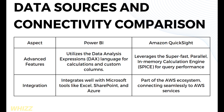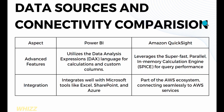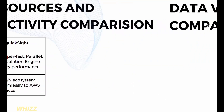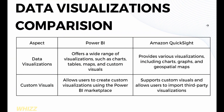In terms of integration, Power BI integrates well with Microsoft tools like Excel, SharePoint, and Azure. While Amazon QuickSight, as part of the AWS ecosystem, connects seamlessly to AWS services.